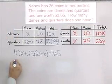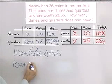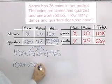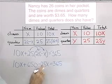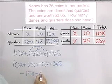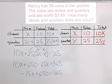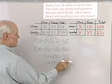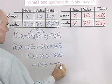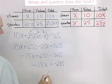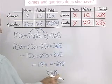Here's the equation. 10X plus 25 times 26 gives 650, minus 25X equals 365. Combining: 10X minus 25X is negative 15X, so negative 15X plus 650 equals 365. Adding negative 650 to each side: negative 15X equals negative 285. Dividing both sides by negative 15 gives X equals 19. I confirmed that on the calculator — 285 divided by 15 is 19.